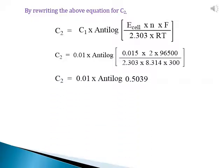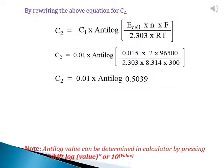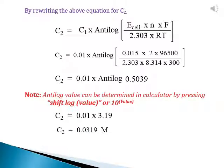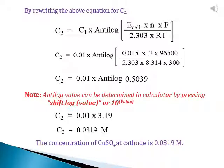Simplifying, C2 = 0.01 × antilog(0.5039). Note that the antilog value can be determined on a calculator by pressing shift-log then the value, or 10 to the power of the value. This gives C2 = 0.01 × 3.19, so C2 = 0.0319 moles. The concentration of copper sulfate at cathode is 0.0319 moles.